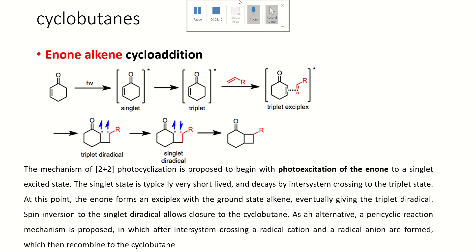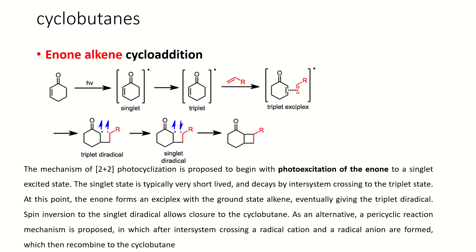At this point, the excited triplet state reacts with the alkene to form an exciplex, and eventually gives a triplet diradical. The spin inversion of this triplet diradical produces a singlet diradical, and the combination of these two radicals results in the formation of a cyclobutane ring.